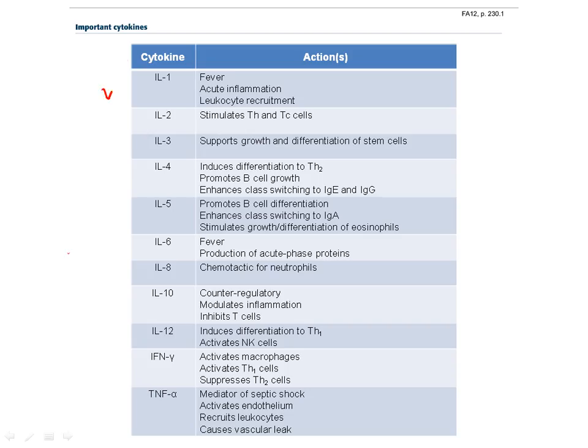IL-1 is an endogenous pyrogen responsible for fever. It's thought that IL-1 is produced by collapse of distal alveoli, i.e., atelectasis, and is responsible for immediate post-operative fever. IL-2 stimulates growth of helper and cytotoxic T cells. IL-3 supports growth and differentiation of bone marrow stem cells.